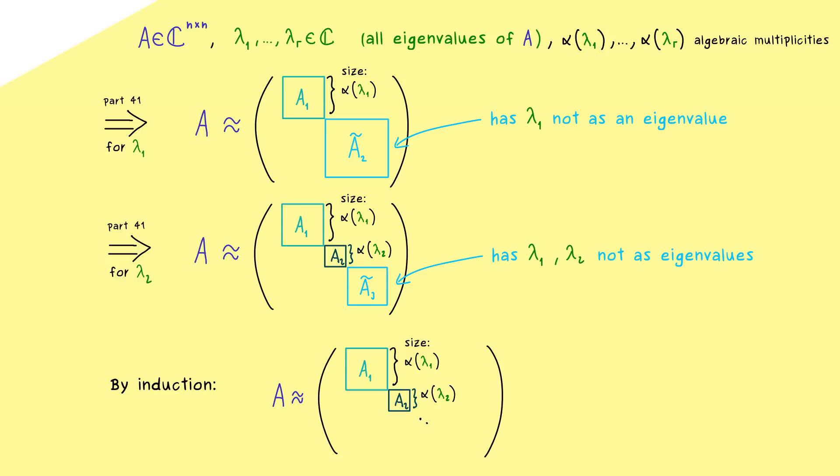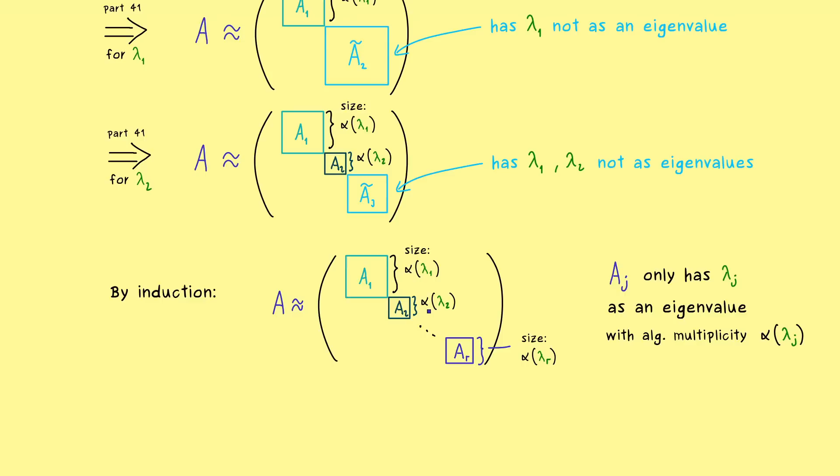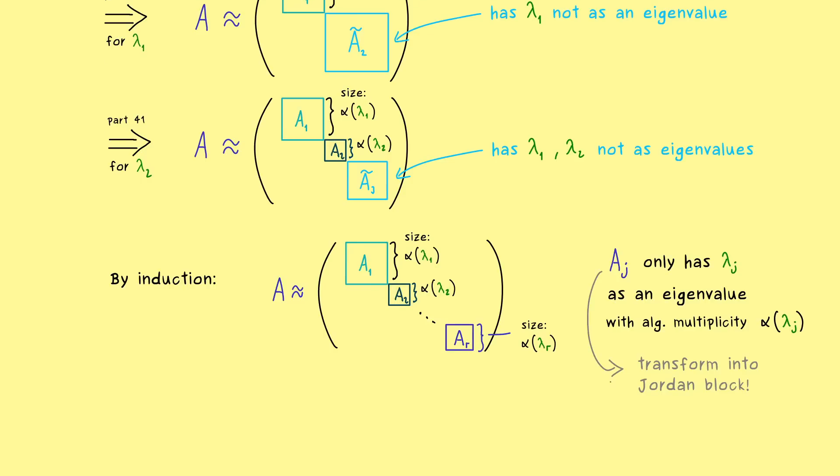And there you should already see this is almost our Jordan normal form. For example, we also know from the last video that each block here only contains a single eigenvalue. In general, we could write that the matrix Aⱼ only has λⱼ as its eigenvalue. And moreover, by the size of the block we also know that the algebraic multiplicity stays the same. And this property is exactly what we have in the Jordan normal form as well. So we are already really close. Therefore, the only thing we have to show is that such a block matrix here can be transformed into a standard Jordan block. Indeed, this is now the last step and the topic of this video.